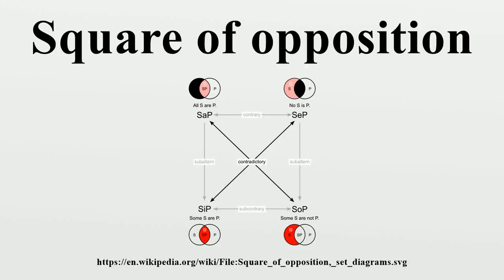In the system of Aristotelian logic, the square of opposition is a diagram representing the different ways in which each of the four propositions of the system is logically related to each of the others. The system is also useful in the analysis of syllogistic logic, serving to identify the allowed logical conversions from one type to another.